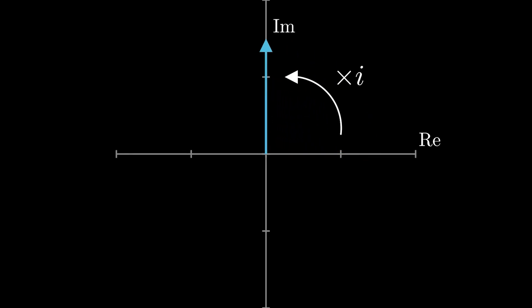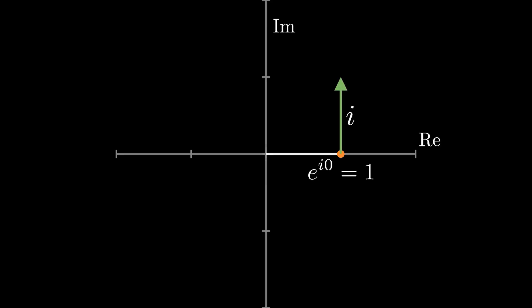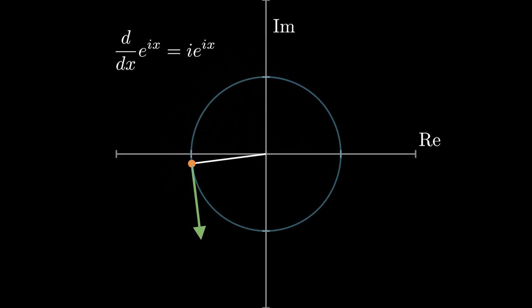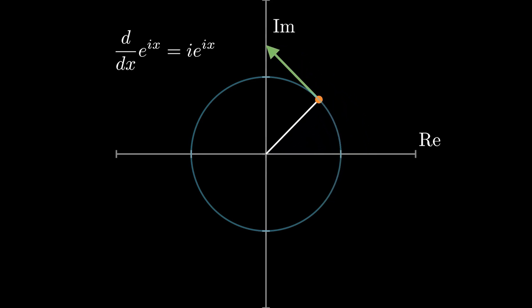Multiplying by i means a 90-degree rotation counterclockwise. So for the derivative of a function to be i times itself means its rate of change is rotational. Since e to the i·0 is 1, the derivative at that point is i. From there, we can trace out a circular pattern — a unit circle — with our derivative acting like a tangential velocity. The derivative i times e to the ix has no real constant scaling the function, so the magnitude of the derivative, or the speed at which we trace the circle, stays constant at 1. Therefore, for any x in e to the ix, we trace around the circle x units or x radians.